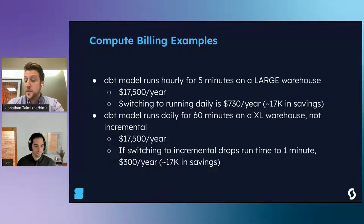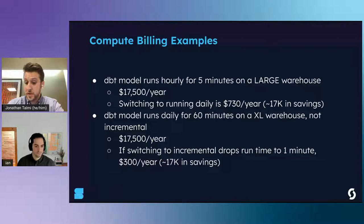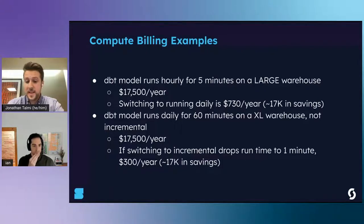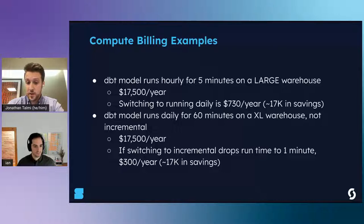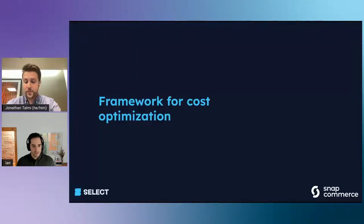For another example: a dbt model that runs every day for 60 minutes on an extra small warehouse will also cost about $17,500 a year. If you're able to get the run time down to 1 minute - by switching to incremental or other optimizations - that will generate savings of $17,000 a year.